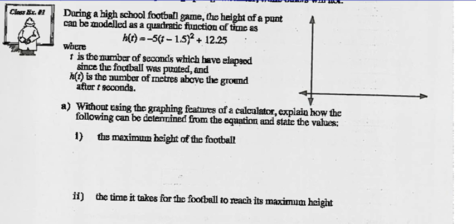Let's look at example 1. During a high school football game, the height of a punt can be modeled as a quadratic function of time as h(t). So height at time t is going to equal negative 5 times (t minus 1.5) squared plus 12.25. And it tells us what the variables mean, where t is the number of seconds which have elapsed since the football was punted, and h(t) is the number of meters above the ground after t seconds, so height.